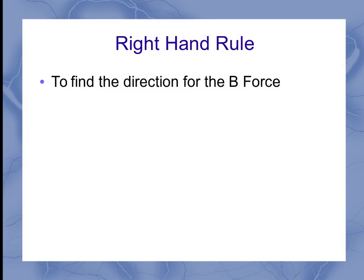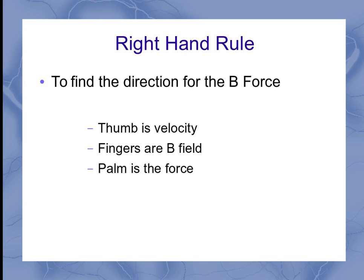To do this, you have to use your right hand. Different parts of your hand represent different quantities. Your thumb represents the velocity. Your fingers represent the magnetic field. And your palm represents the direction of the force. That would be the force on a positive charge.